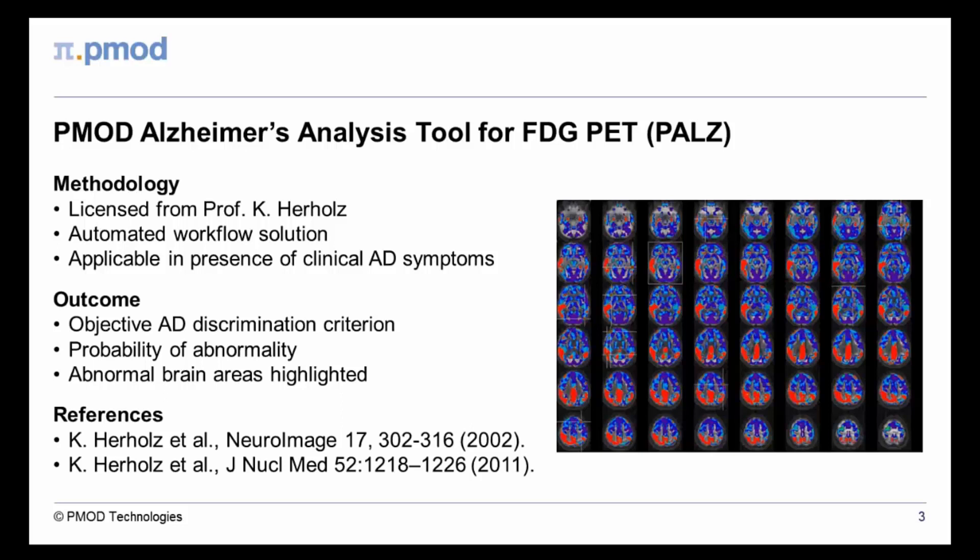It is applicable to FDG brain PET scans from patients with clinical symptoms of Alzheimer's disease. Data processing is fully automated and results in an objective criterion with a probability of abnormality. The numerical outcome is complemented by a visual summary highlighting the significantly abnormal brain areas. These features make it easy to obtain an overview of the extent of disease progression.